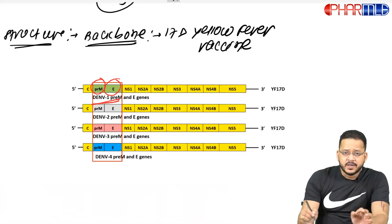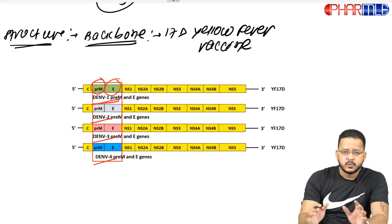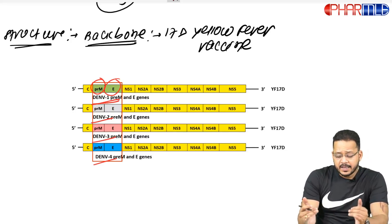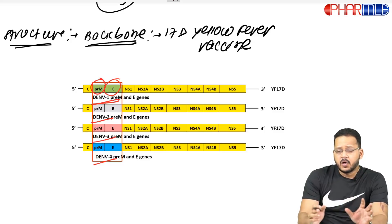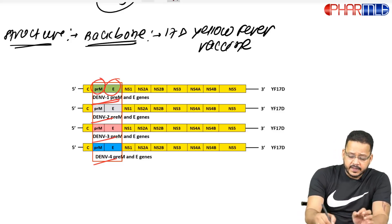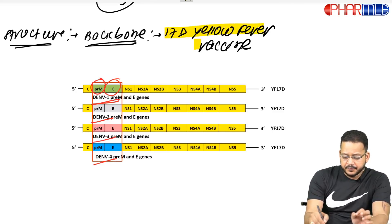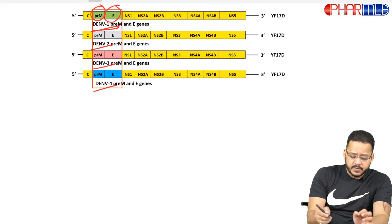We have replaced the prM and envelope genes with dengue virus 1, dengue virus 2, dengue virus 3, and dengue virus 4 genes. So the 17D yellow fever vaccine backbone has been altered so that this vaccine can carry all four strains of dengue. This is an important MCQ point — from which vaccine has Dengvaxia been developed.